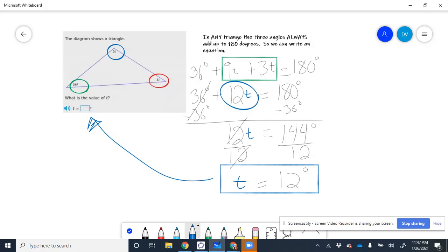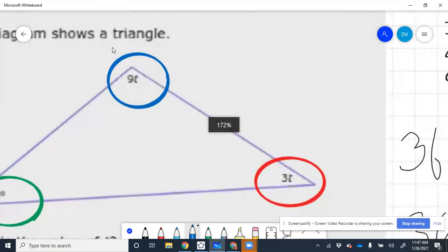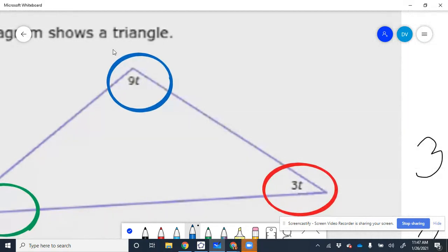So whenever we see the letter T, we want to be able to replace it with 12 degrees. So I'm going to zoom in here. This blue angle, I know it says 9 times T, but we just said that T is 12. So this will be 9 times 12, which is 108 degrees.